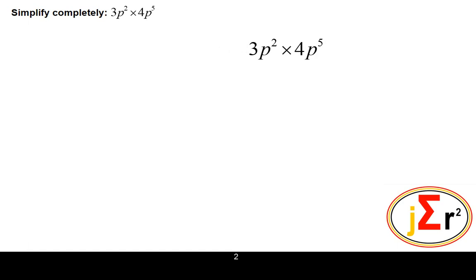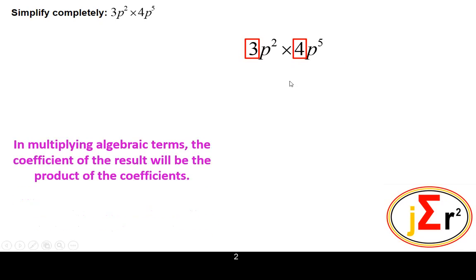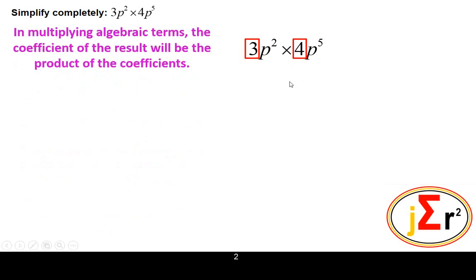Which of course may be found very simply. We consider, first of all, the coefficients, and the resulting coefficient will be the product of the two coefficients. In multiplying algebraic terms, the coefficient of the result will be the product of the two coefficients.